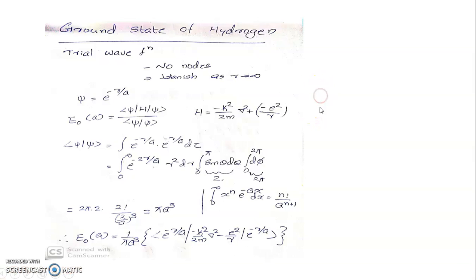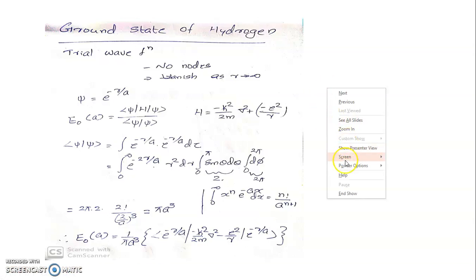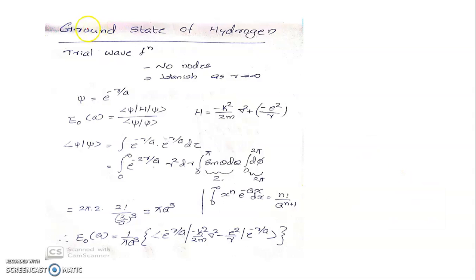Now let us see the evaluation of the ground state energy of hydrogen atom using the variational method — specifically, the ground state of hydrogen atom. First of all, we will have to identify a trial wave function that will be most suitable to represent the hydrogen atom in the ground state.